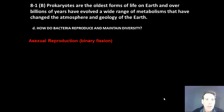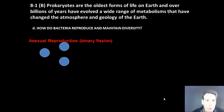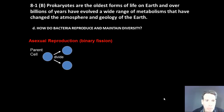Keep in mind that bacteria reproduce asexually. So if we have one bacterium, such as this parent cell over on the left, it divides through binary fission to make two daughter cells.